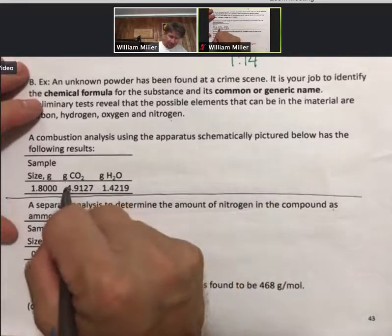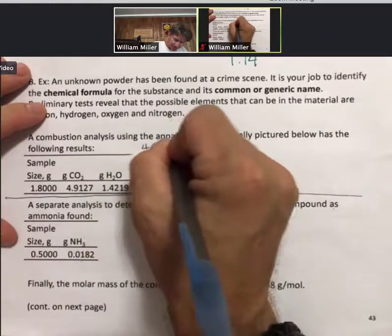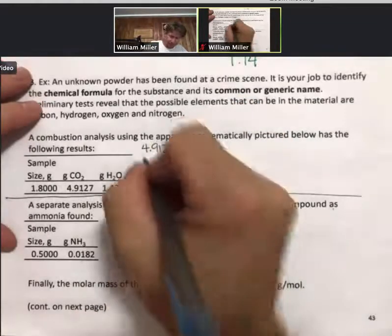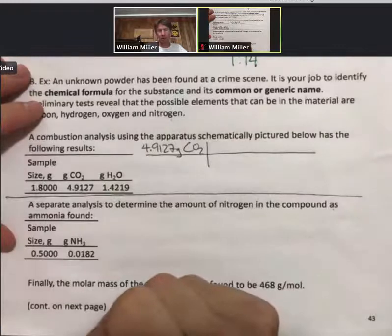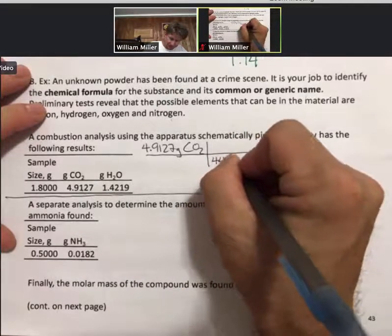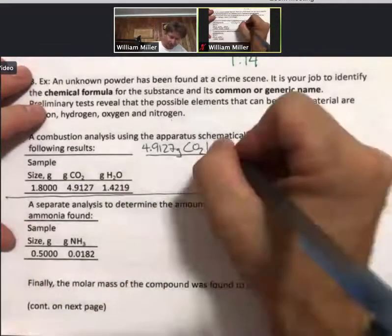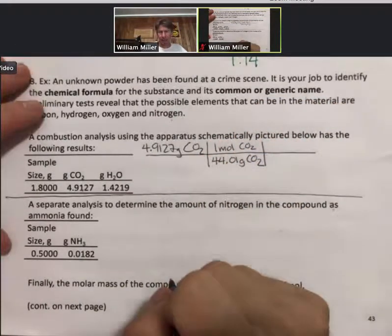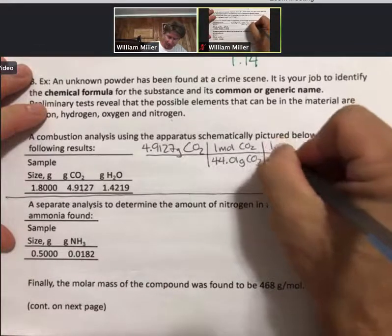So 4.9127 grams of carbon dioxide, use the molar mass of 44.01 grams of carbon dioxide for one mole. And in one mole of carbon dioxide, there's one mole of carbon.